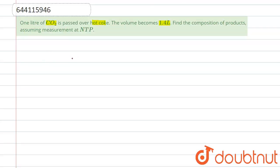The reaction is CO2 is passing over hot coke, let's say C, and this gives 2CO. The volume becomes 1.4 liter. So from here what we observe is that: